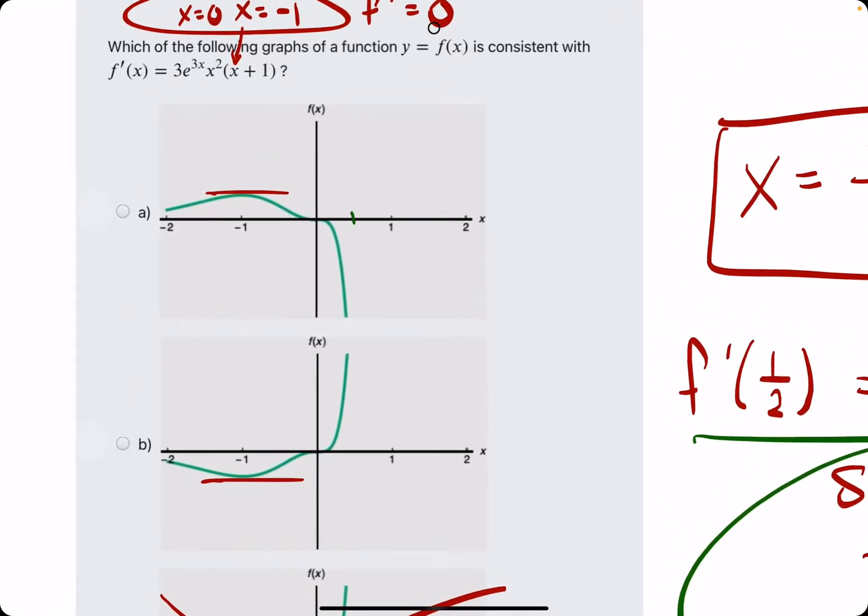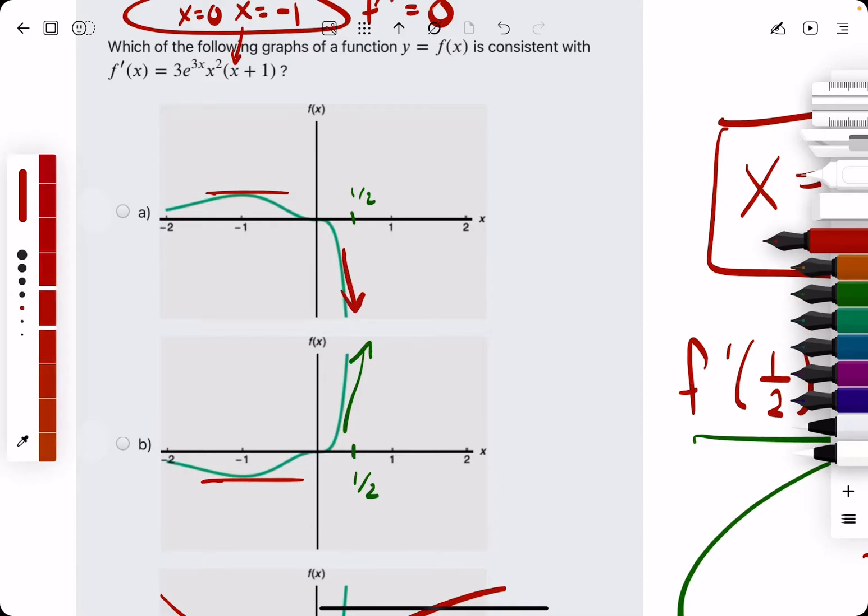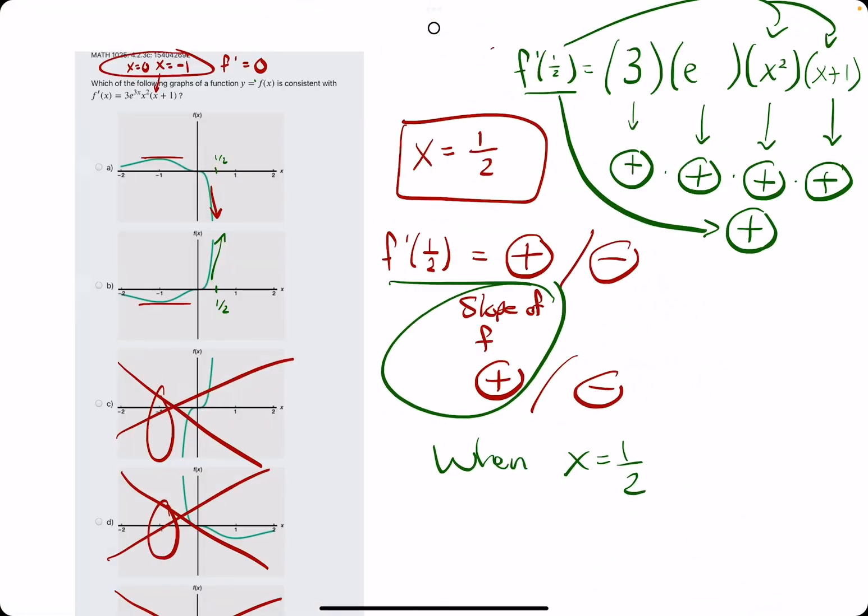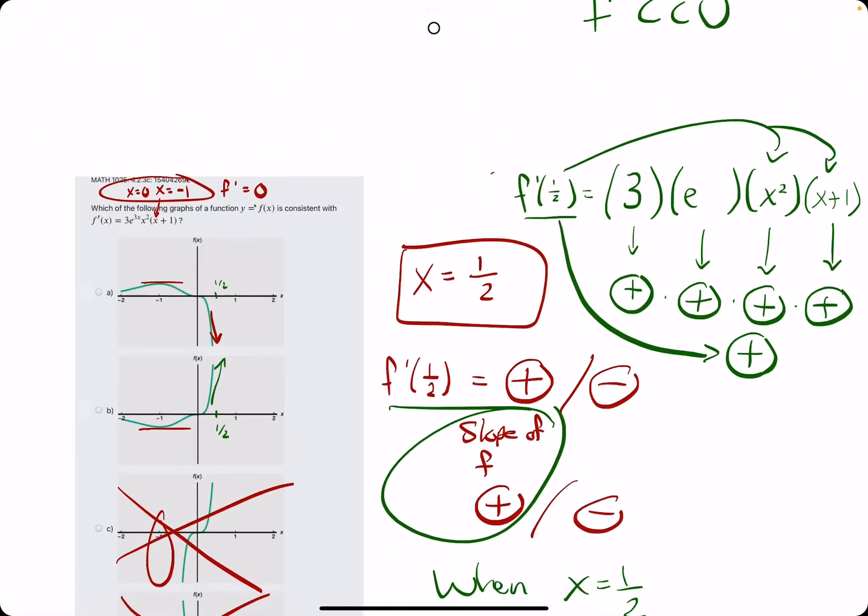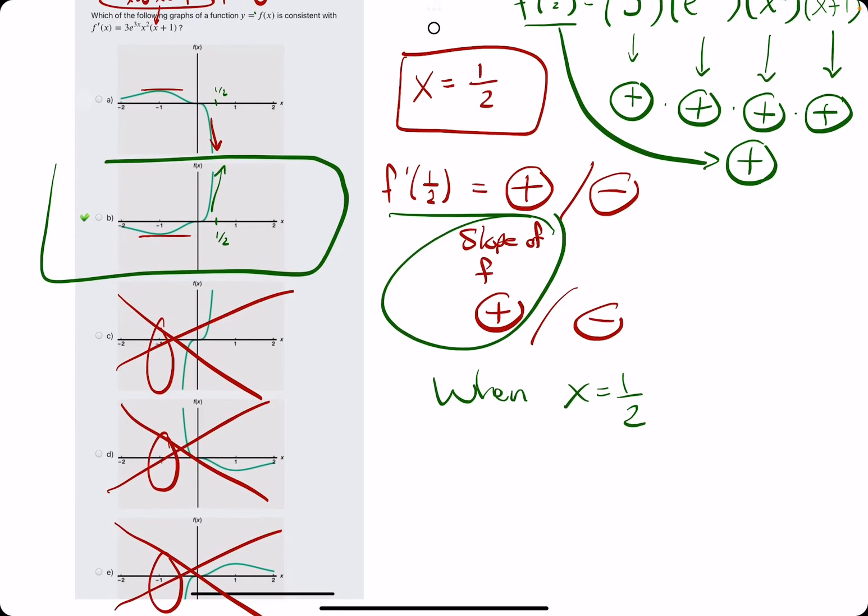So when we look at these graphs at 1 half and at 1 half, we can see that b is a very positive slope while a has a very negative slope at x equals 1 half. So we're looking for the one that had a positive slope, positive f prime value at 1 half. So when we break out the eraser, we see that b is our answer.